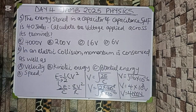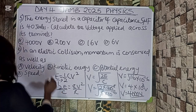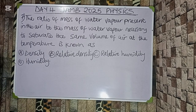Question six: in an elastic collision, momentum is conserved as well as what? Options are: (A) velocity, (B) kinetic energy, (C) potential energy, (D) speed. The correct option is B — kinetic energy. In an elastic collision, both momentum and kinetic energy are always conserved.